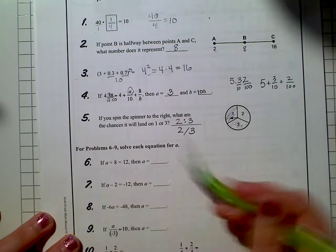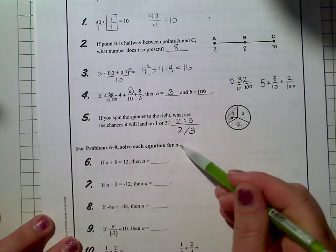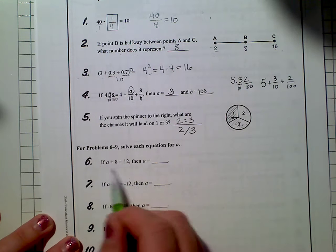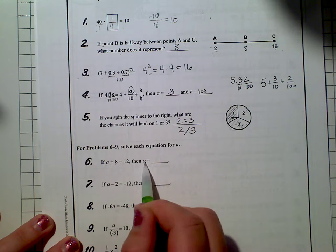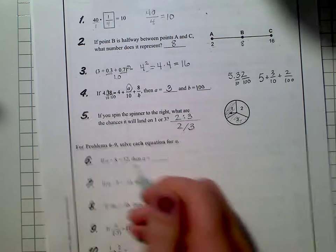For problems 6 through 9, solve each equation for A. If A plus 8 equals 12, then A equals, well, what plus 8 equals 12? 4.